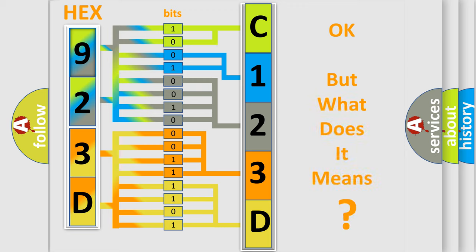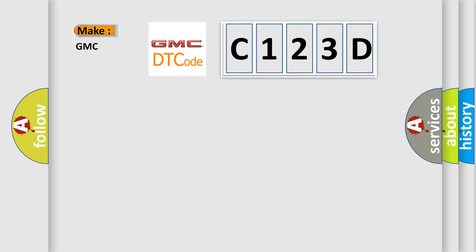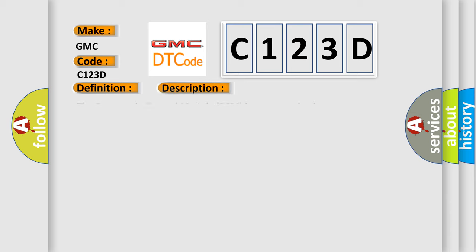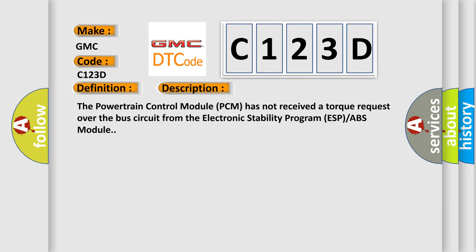The number itself does not make sense to us if we cannot assign information about what it actually expresses. So, what does the diagnostic trouble code C123D interpret specifically for GMC car manufacturers? The basic definition is: lost ESP torque request message. The powertrain control module (PCM) has not received a torque request over the bus circuit from the electronic stability program (ESP) ABS module.